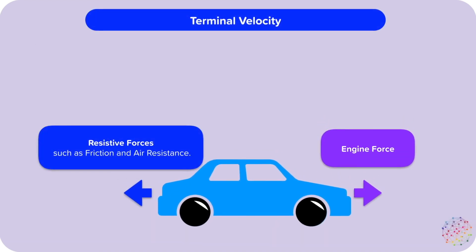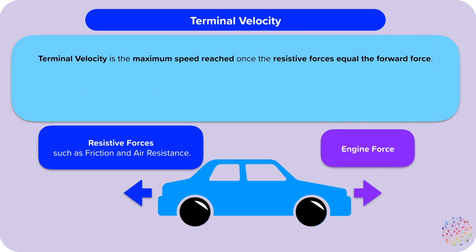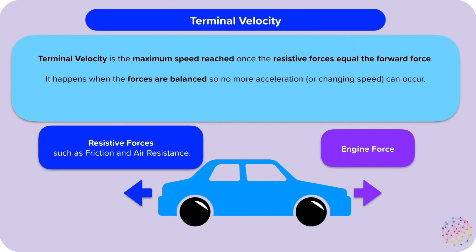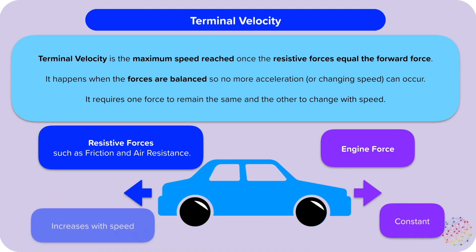Terminal velocity is the maximum speed reached once the resistive forces equal the forward force. It happens when the forces are balanced, so no more acceleration or changing speed can occur. To reach terminal velocity, you need one force to remain the same — in this case our engine force — and the other to change with speed — in this case our resistive forces. Because the engine force is constant, the resistive forces can increase until they equal the engine force, the forces balance, and we reach a top speed: a terminal velocity.